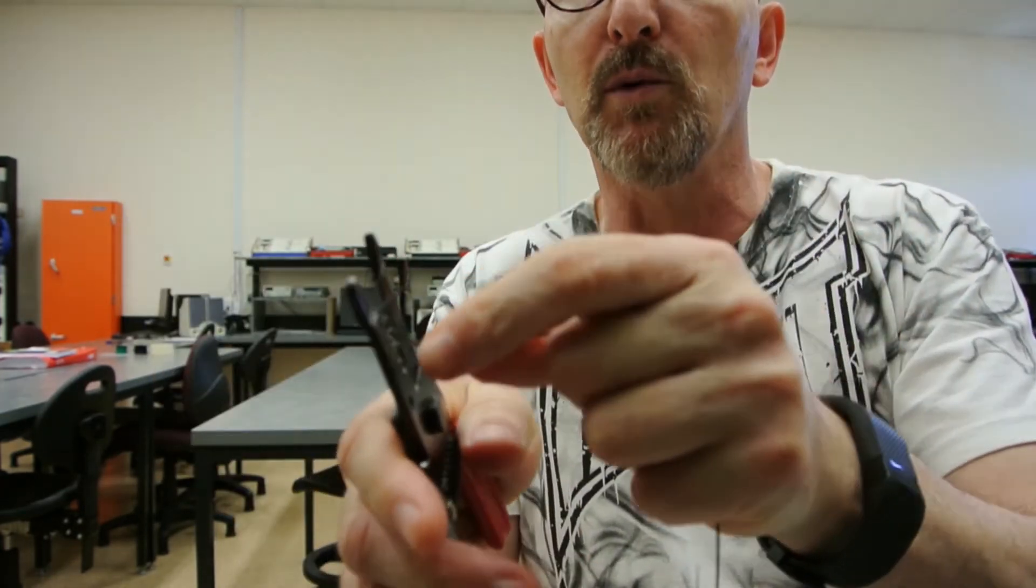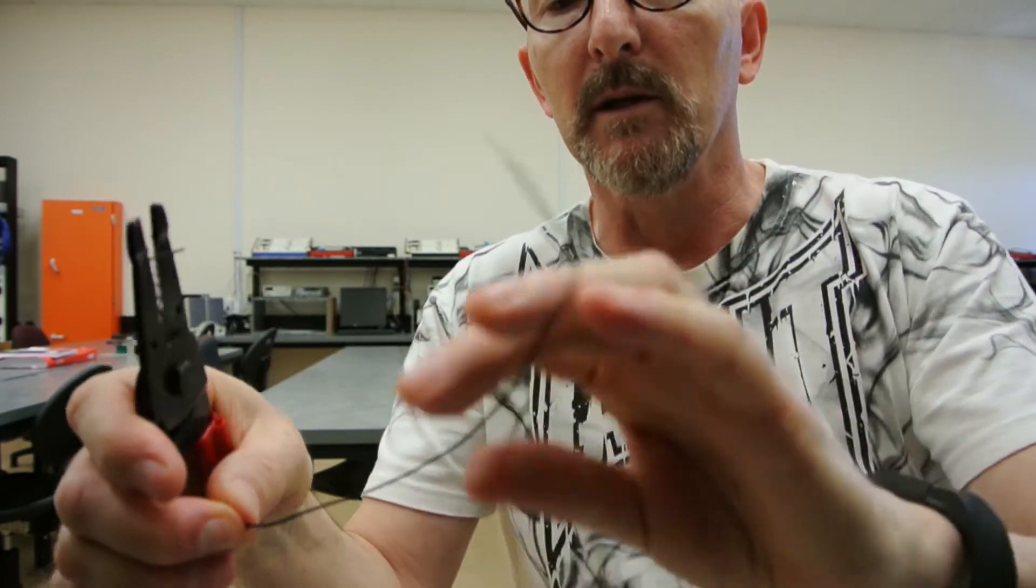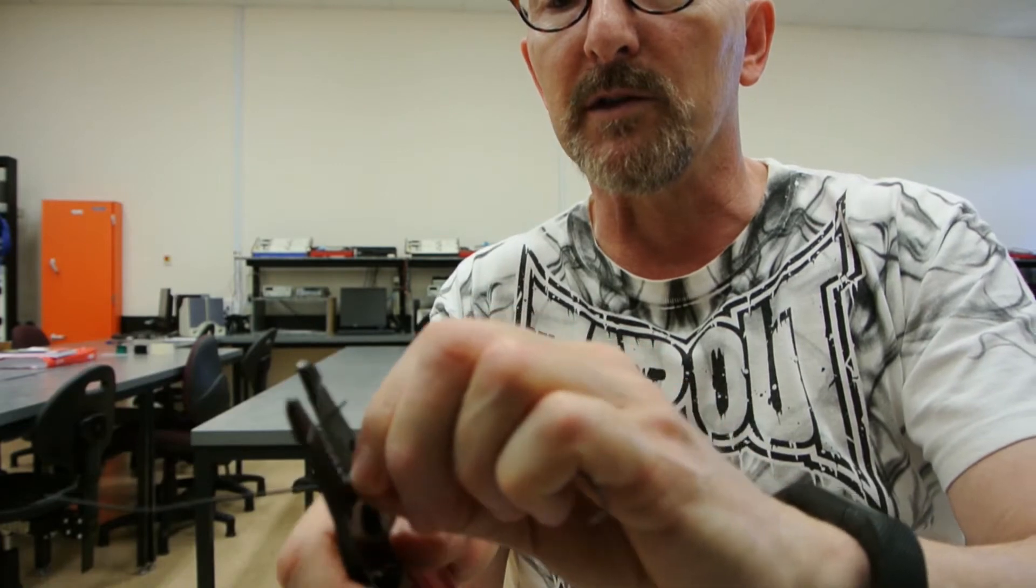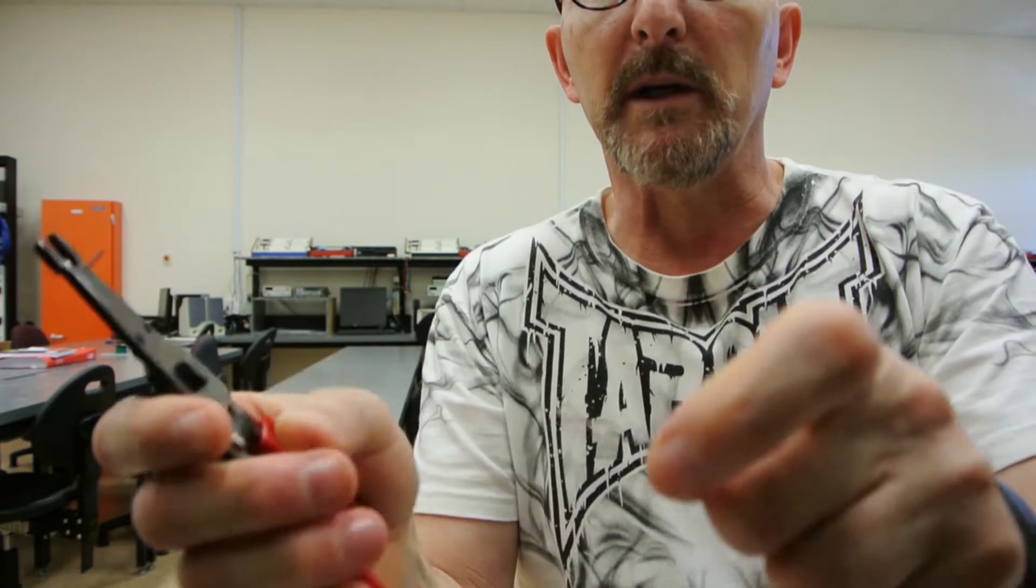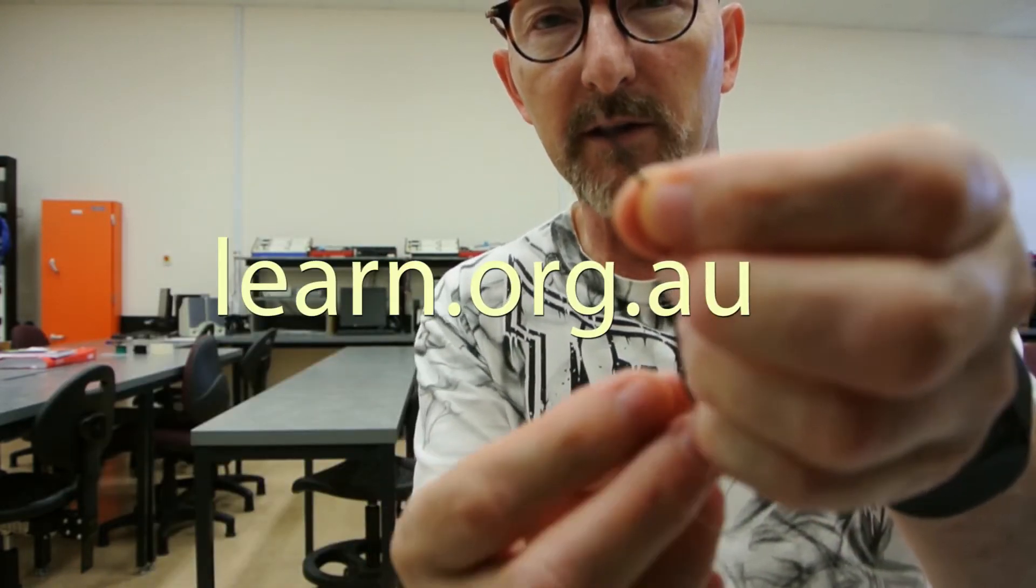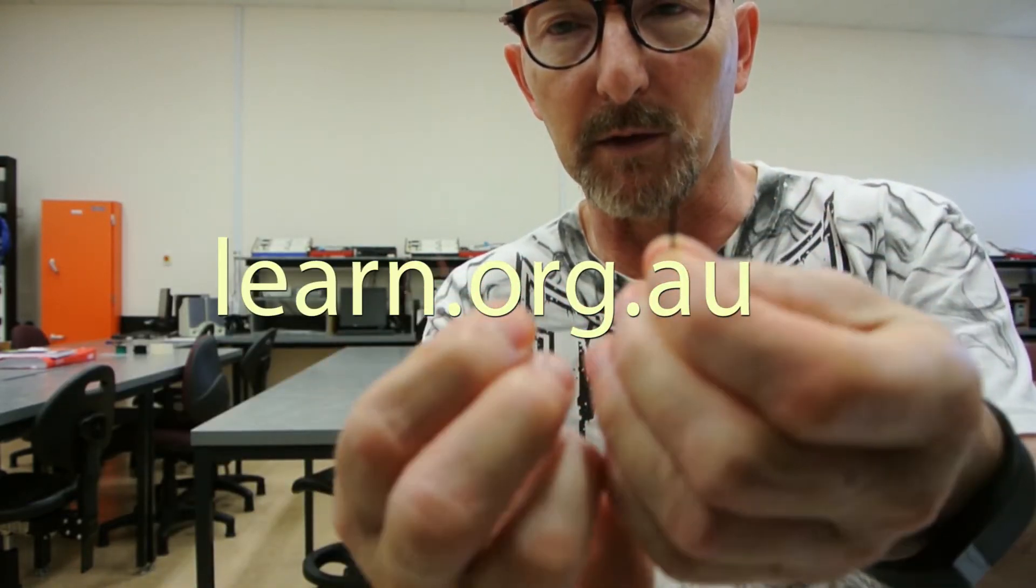You only need about five millimeters of copper wire to go into the breadboard system. Strip the other end there, a little bit longer for the other end to go underneath the connector from the power supply.